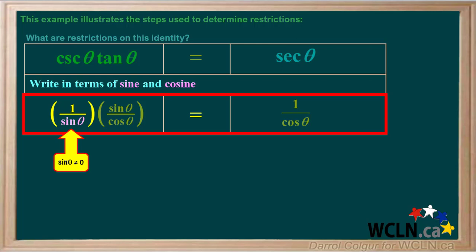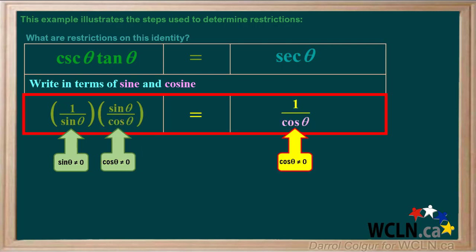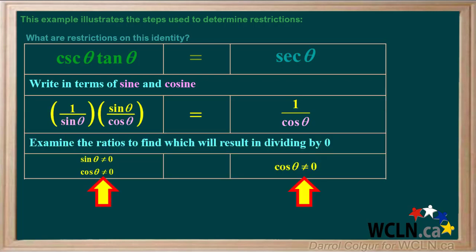Because sine theta is in the denominator here, it cannot be equal to zero. And because cosine theta is in the denominator here, it cannot be equal to zero. Also, cosine theta is in the denominator over here, so it cannot be equal to zero. So we've examined the ratios and found that if sine theta or cosine theta was equal to zero, we would be dividing by zero. Therefore, we set the restrictions that sine theta is not equal to zero and cosine theta is not equal to zero.